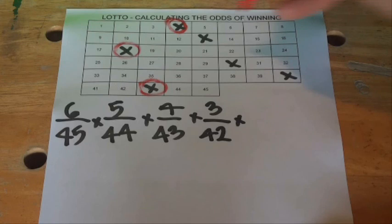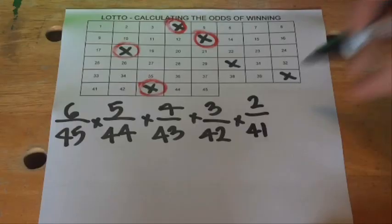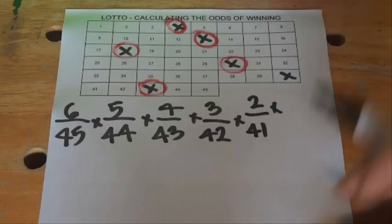For the fifth ball, the second-to-last one, we've got two chances out of 41 of it being one of our numbers on the grid.